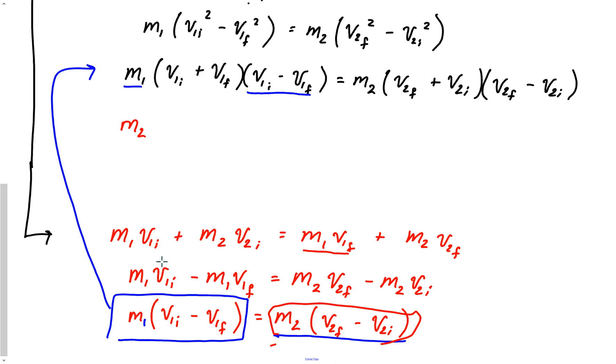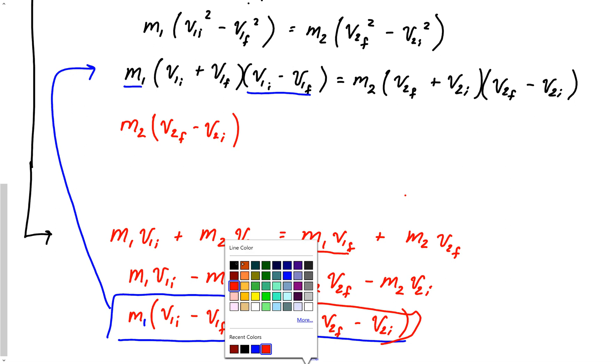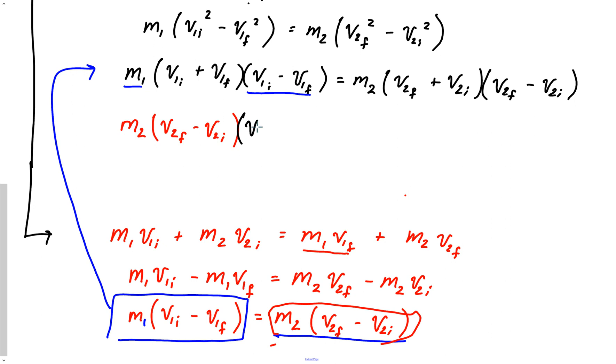So that means in this problem, I'm going to have now M2. I'm substituting. I'm taking this and bringing it up to our conservation of energy. M2 times V2 final minus V2 initial times, and what did we already have in that thing? V1 initial plus V1 final. And then equals, on the other side, we had M2 V2 final plus V2 initial times V2 final minus V2 initial.